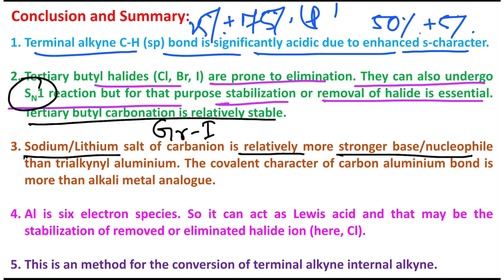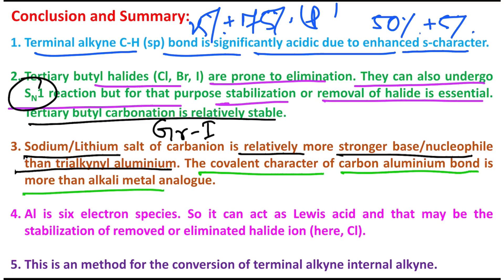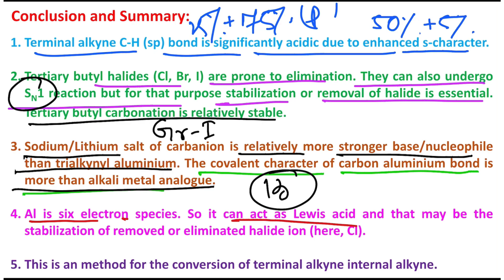Group 1 salts — sodium or lithium organometallics, whether sp³ like butyl lithium or sp like alkynyl lithium — are relatively stronger bases or nucleophiles compared to trialkynyl aluminium. The carbon–aluminium bond has significantly more covalent character than alkali metal analogs because aluminium belongs to Group 13, whereas lithium and sodium belong to Group 1. Additionally, aluminium is a six-electron species and can act as a Lewis acid.